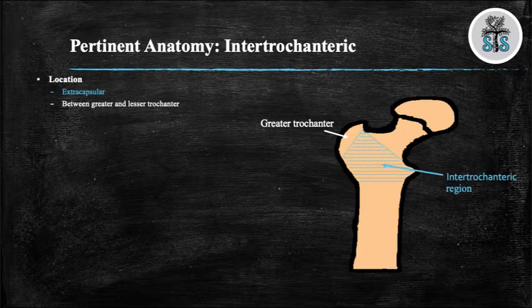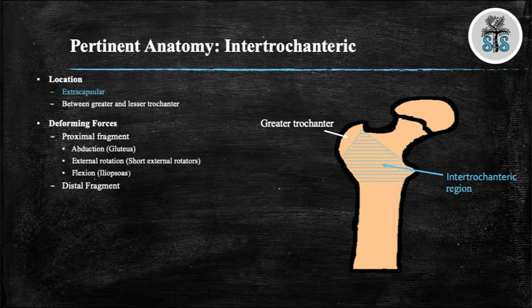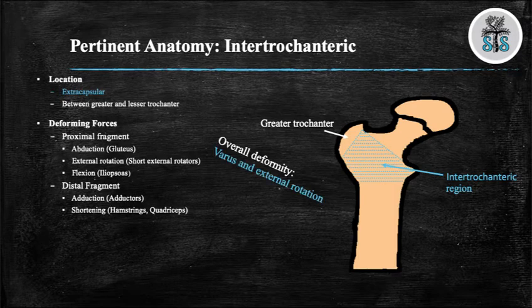IT hip fractures are defined as the region between the greater trochanter and the lesser trochanter. There are several deforming forces you should be aware of. The proximal deforming forces are the abductors, the external rotators, and the iliopsoas. The abductors — the gluteus medius, minimus, and tensor fasciae latae — cause abduction.